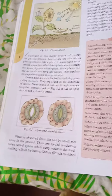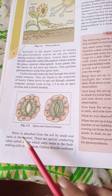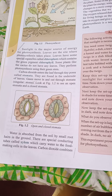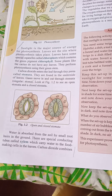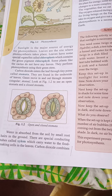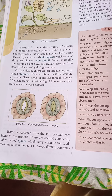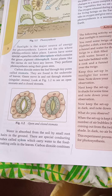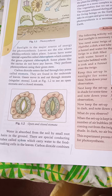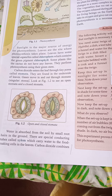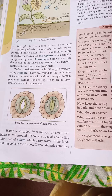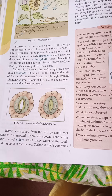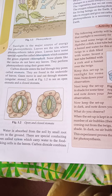Water is absorbed from the soil by small root hairs in the ground. There are special conducting tubes called xylem which carry water to the food-making cells in the leaves.